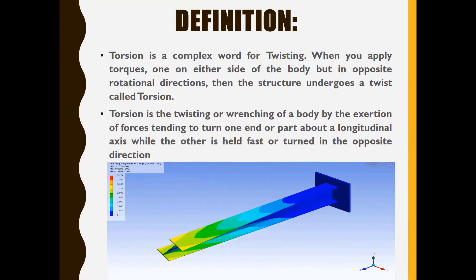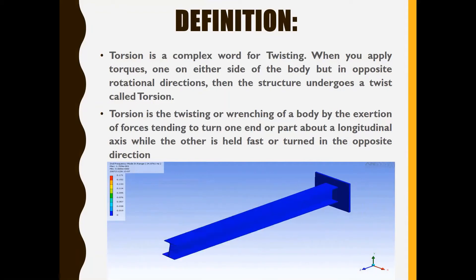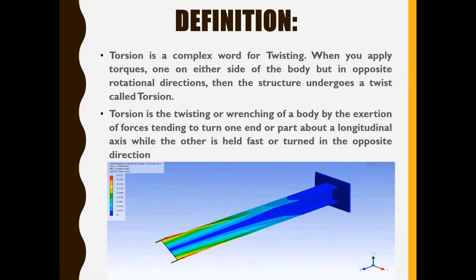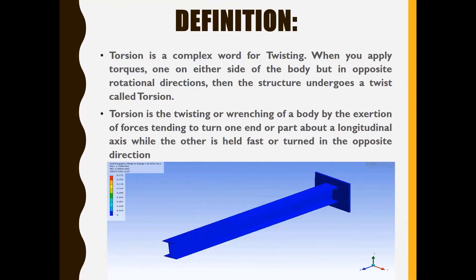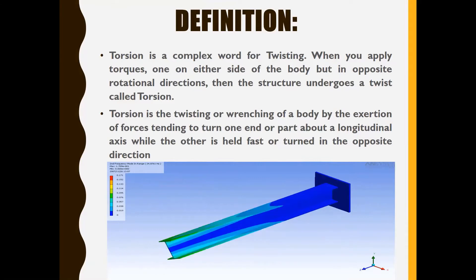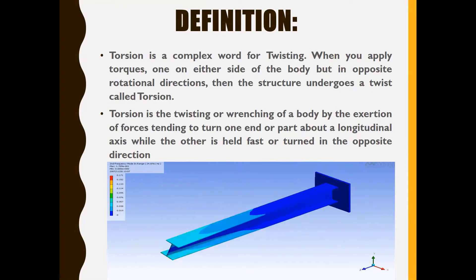When you apply torque — for example, you have a round door knob and you rotate it — it gets twisted. One side of the body rotates in opposite rotational directions, and the structure undergoes a twist called torsion. Torsion is the twisting or wrenching of a body by forces tending to turn one end about a longitudinal axis while the other is held fast or turned in the opposite direction.